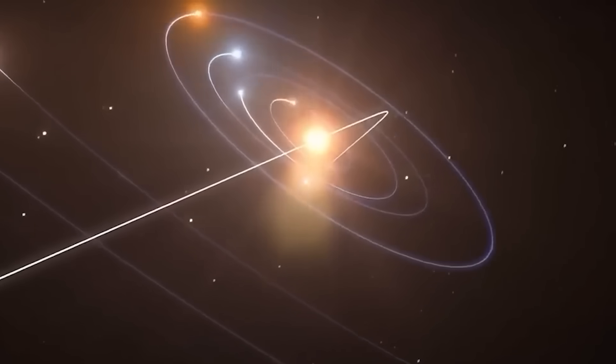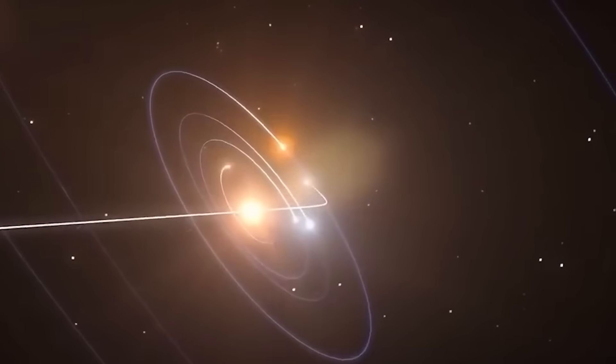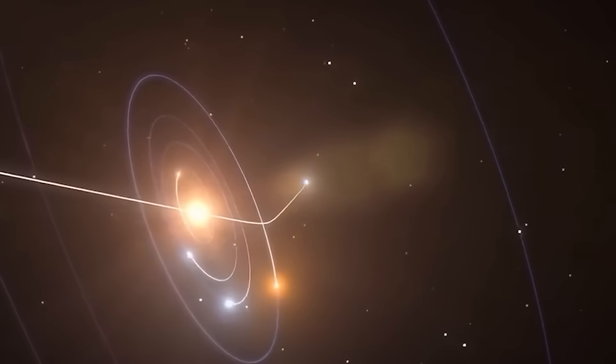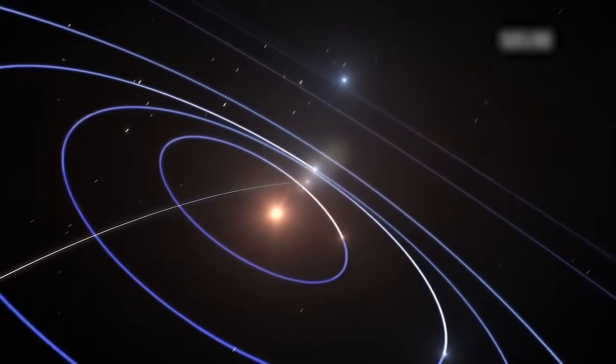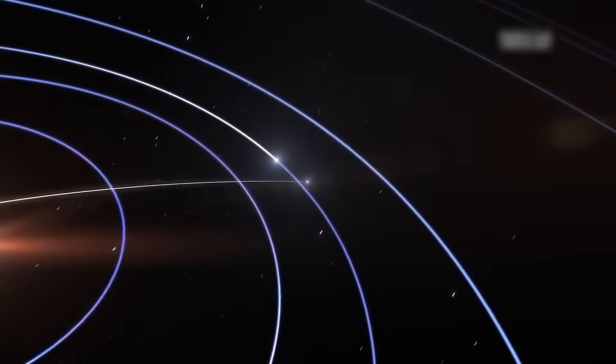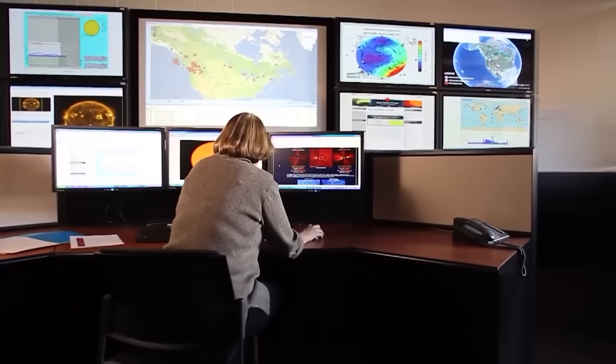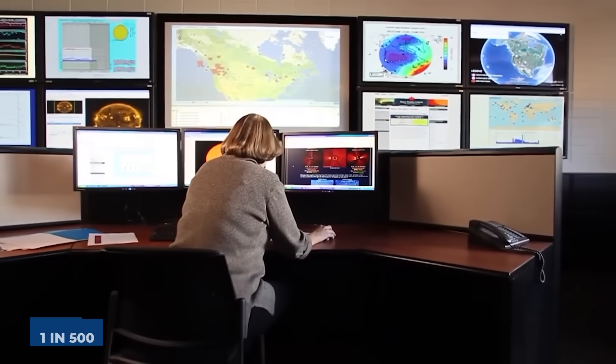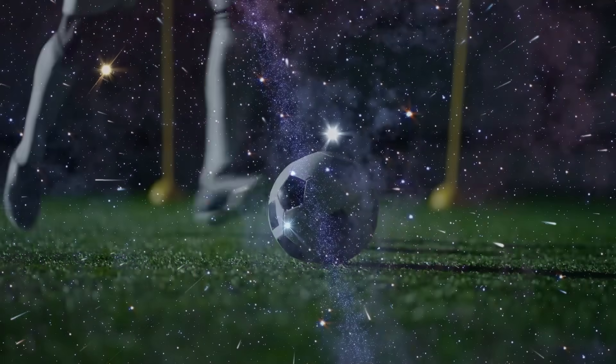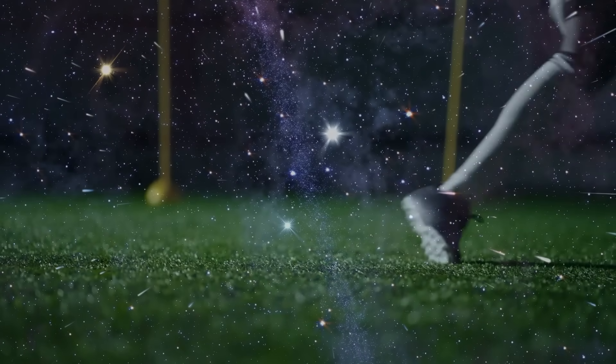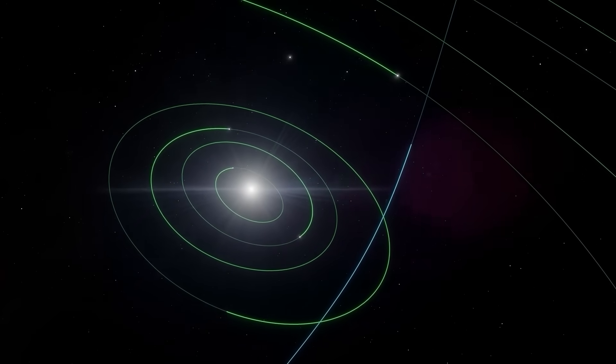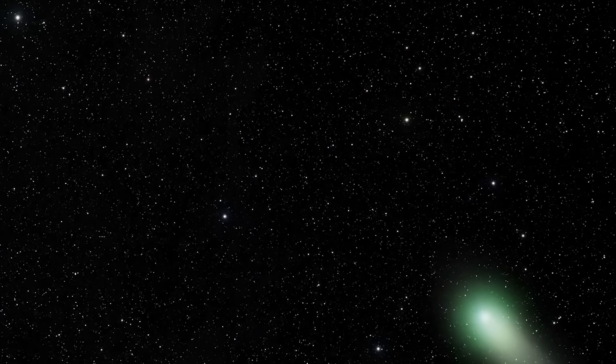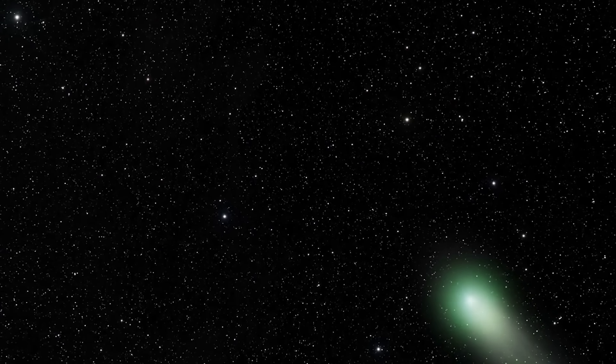The thing is, it's traveling within the ecliptic plane, the flat, pancake-like disk where all the planets in our solar system orbit. The odds of a random interstellar object lining up so perfectly with our planetary plane are incredibly low. Something like a 1 in 500 chance. It's like throwing a dart from across a football field and having it land perfectly flat on the 50-yard line. It's possible, sure, but it's eyebrow-raisingly precise.